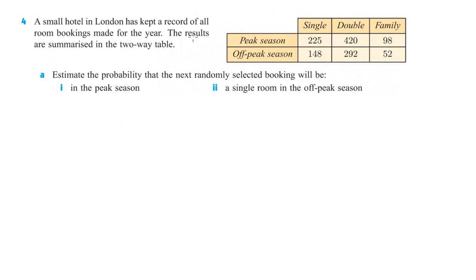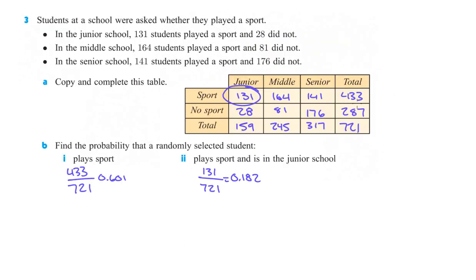Number 4: a small hotel in London keeps a record of all room bookings made for the year. The results are summarized in a two-way table. Actually, going back — I made a mistake. The total should be 436, and this is 285. So that changes the probability to 436 divided by 721, which is 0.605. This one here should be okay.